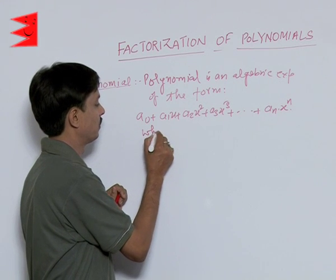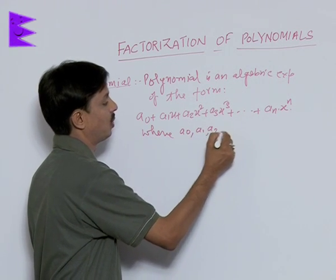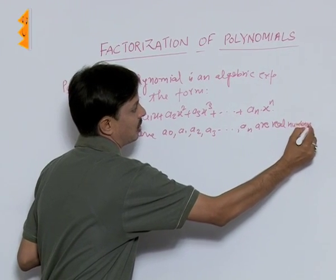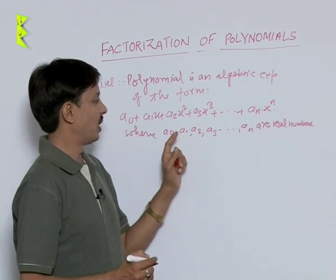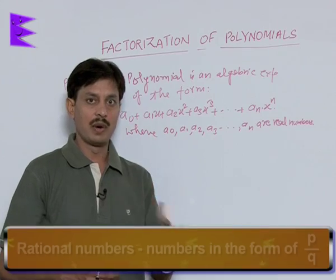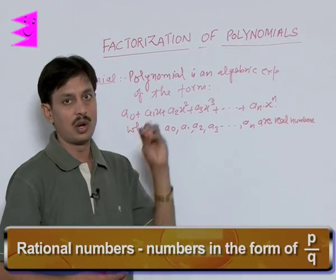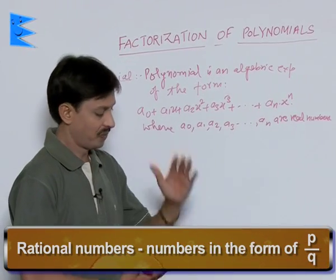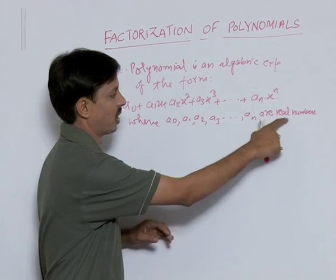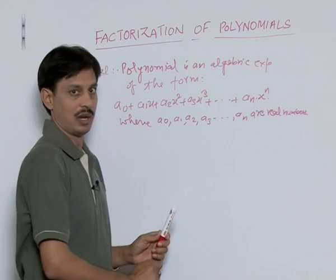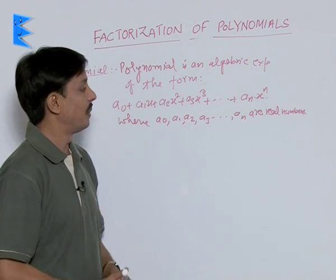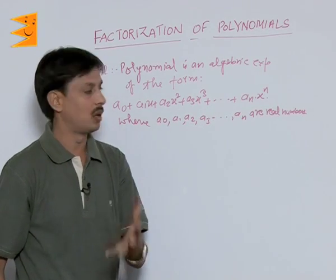The first condition is that A0, A1, A2, A3, ... An are real numbers. These coefficients can be rational or irrational — you are well aware of rational numbers: numbers in the form P over Q, or non-terminating but repeating decimals. Every natural number, whole number, and integer is always a rational number. So A0, A1, A2, A3, ... An are the coefficients of the variables in the algebraic expression, and they must be real numbers — meaning either rational or irrational.